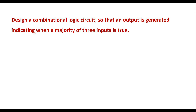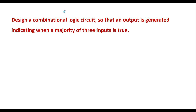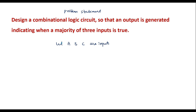Now let me explain these steps by taking one simple example. The problem statement is: design a combinational logic circuit so that an output is generated indicating when a majority of 3 inputs is true. By seeing this problem statement I can say that this circuit has 3 inputs and 1 output. Let A, B, and C be the inputs and let Y be the output.